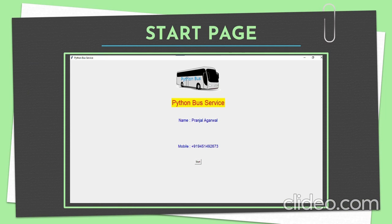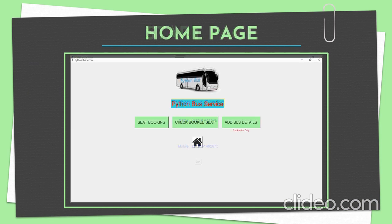On running the Python program, you will see the start page where you enter your username and mobile number. The system has already preserved those details. When you click on Start, it will show three options: seat booking, check booked seat, and add bus details.